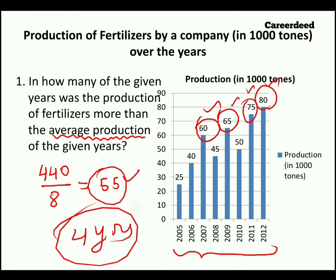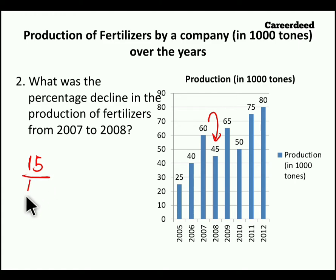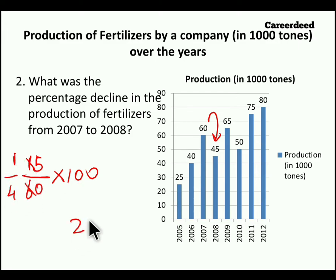Moving to the second question: what was the percentage decline in production of fertilizers from 2007 to 2008? Comparing to 2007, 2008 is how much lesser? 60,000 tons minus 45,000 tons equals 15,000 tons lesser. In 2007, production is 60, so 15 by 60 is one-fourth. One-fourth of 100 is 25%. So from 2007 to 2008, production declined by 25%.